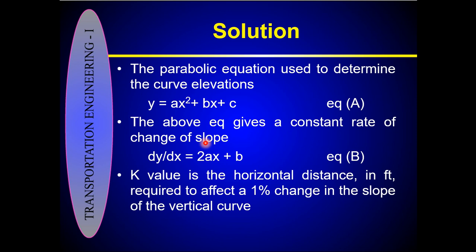Before calculating the K value, you should understand what it means. The K value is the horizontal distance in feet required to effect a 1% change in the slope of the vertical curve. K values are important in vertical curve design — they give the length of curve required to effect a 1% change in slope, and can also be used to determine the highest or lowest point of the curve. Mathematically, K = L / A.